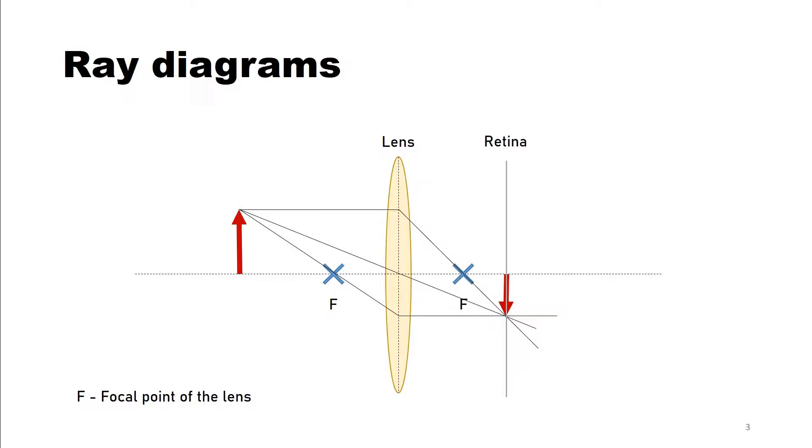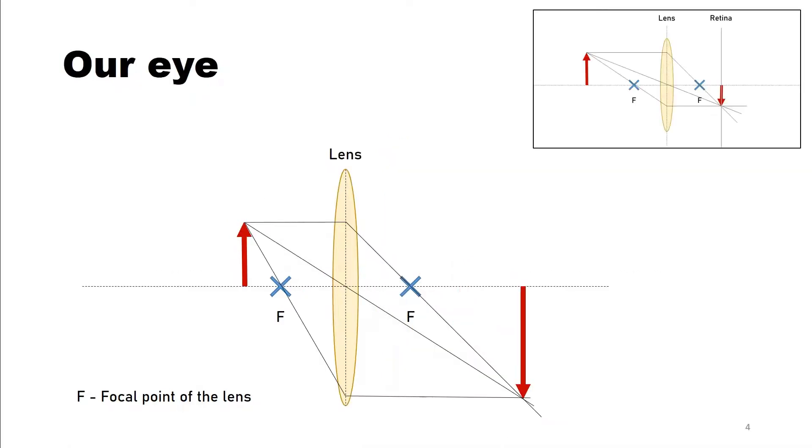So let's pretend that is actually our eye here. What would happen if we moved the object closer to it? And I think you already know the answer. The closer it comes to the lens or to your eye, the larger it appears on the screen.